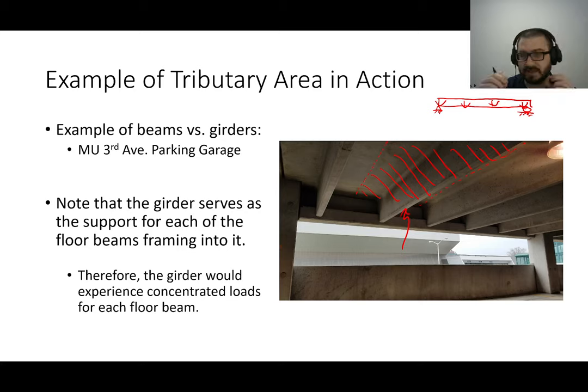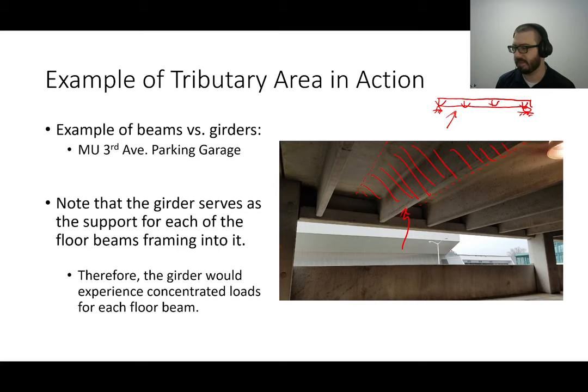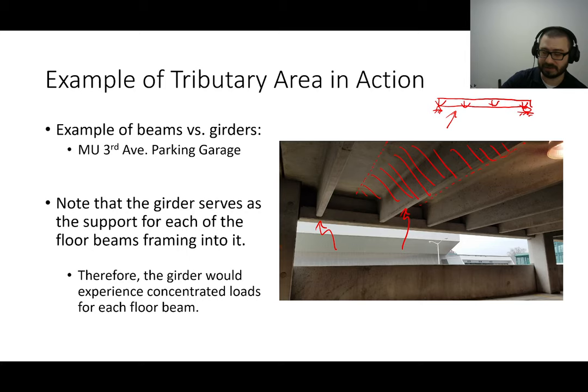So we've got another beam with loads on it. Those reactions go to the column, and those loads go to the ground. That's the hip bone connected to the leg bone analogy. If we're looking at a general floor plan subjected to a pressure load — say 25 pounds per square foot — then for a given floor beam, the tributary area is the shaded region around it. Taking that 25 PSF and multiplying by the tributary width, I can develop a simply supported beam model with a uniformly distributed load.